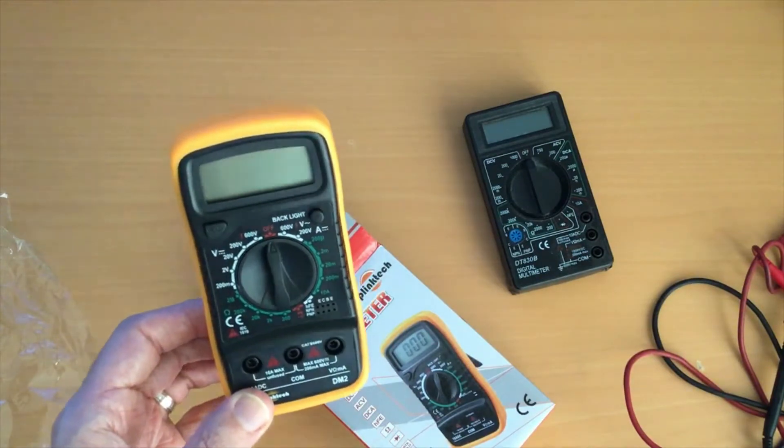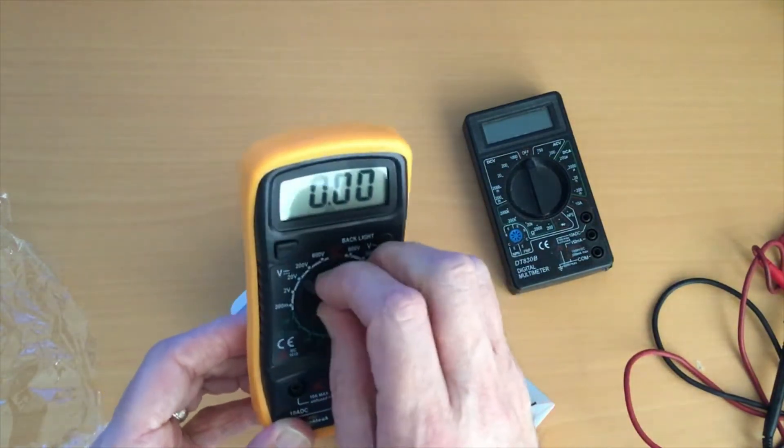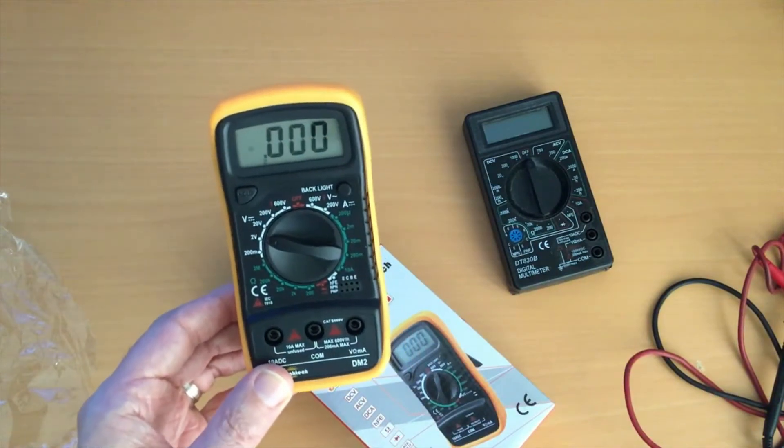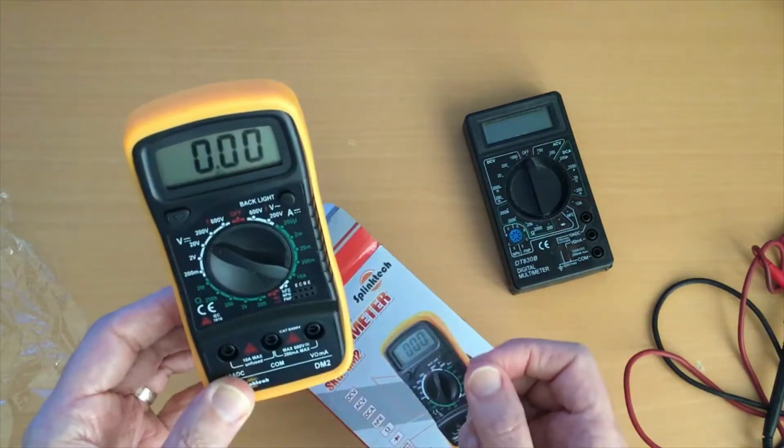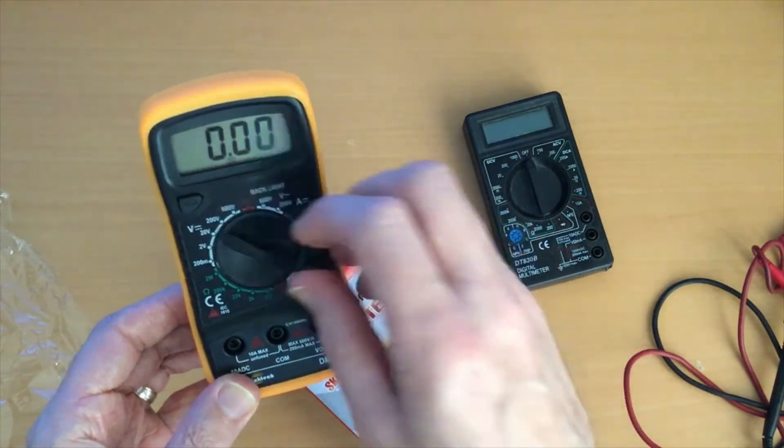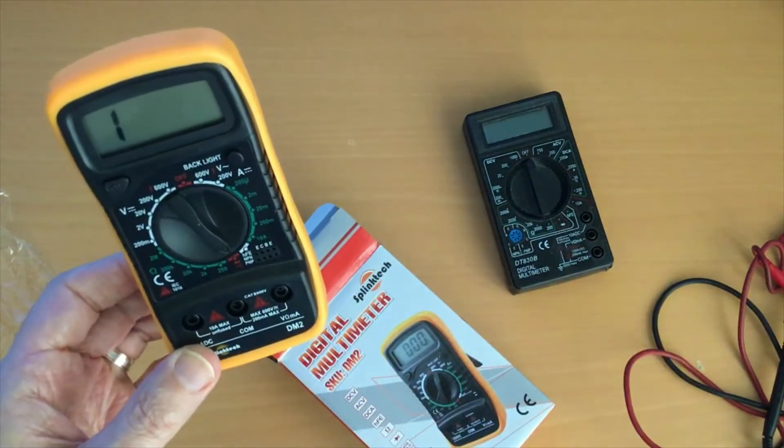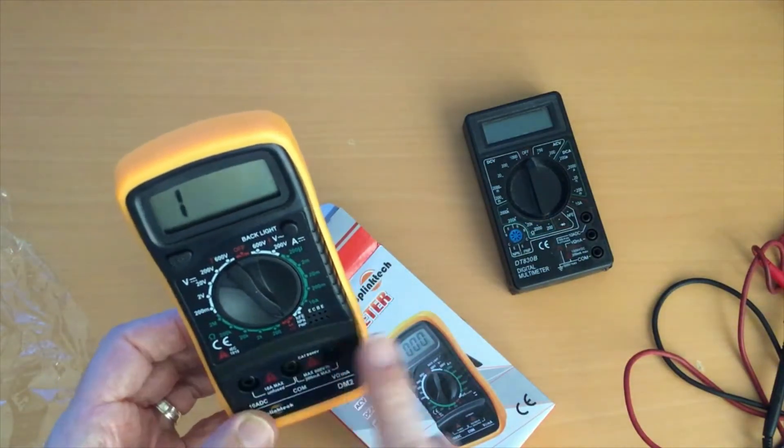For computer projects and other projects that I work on and build, generally speaking it's going to be set to 20 volts DC or it's going to be set to the continuity. Occasionally I'm testing current so I might go to the current setting.